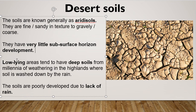In low-lying areas of deserts, soils can be very deep. This comes from millennia of weathering in the highlands, where soil is washed down by rain. Mountains such as the Himalayas get broken down by weathering and erosion, and those sediments get transported down to the desert by rain and flash floods. As a result, if you went into a low-lying area in the desert with a spade and started digging, you'd be digging through basically pure sand for a very long time.